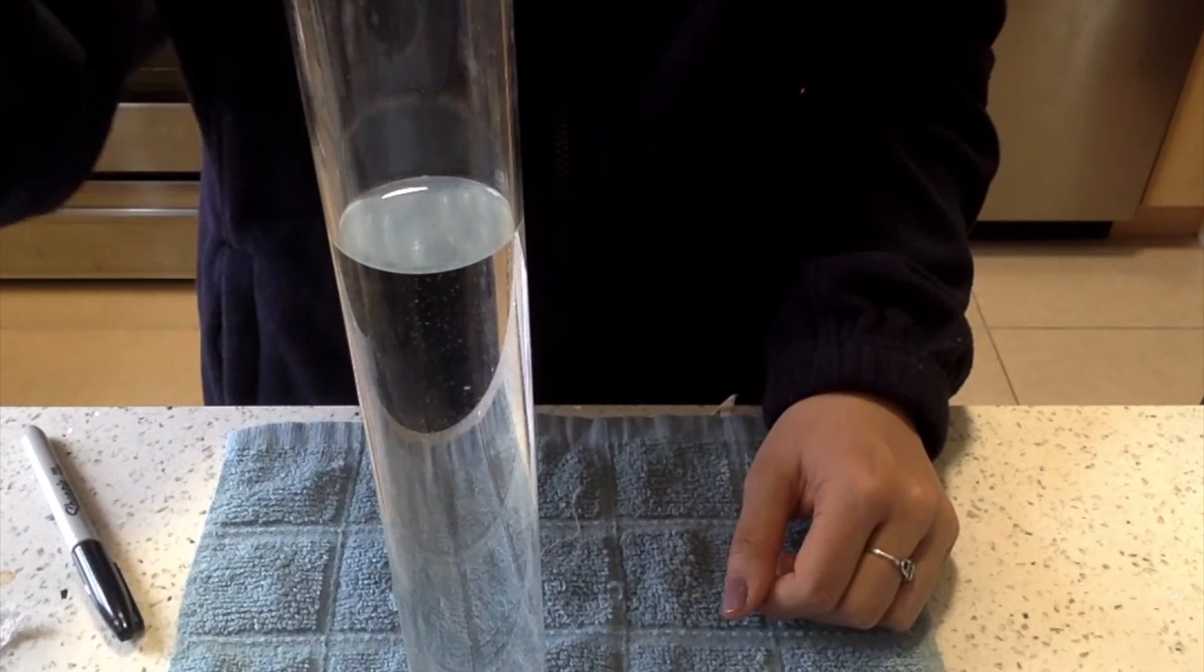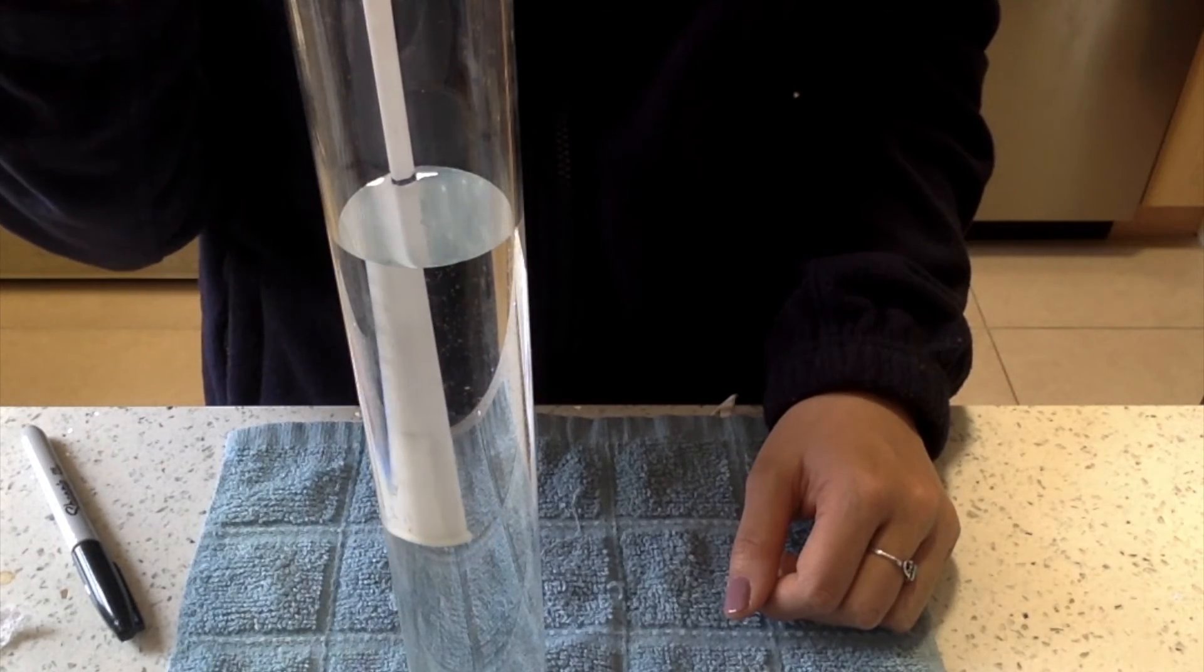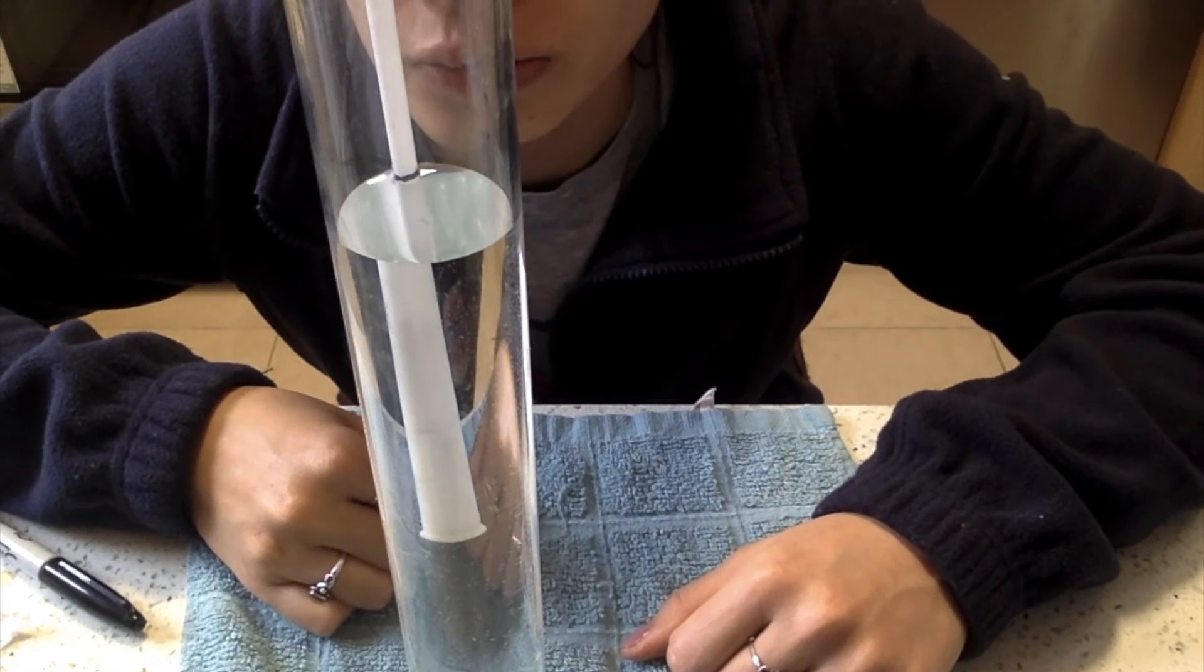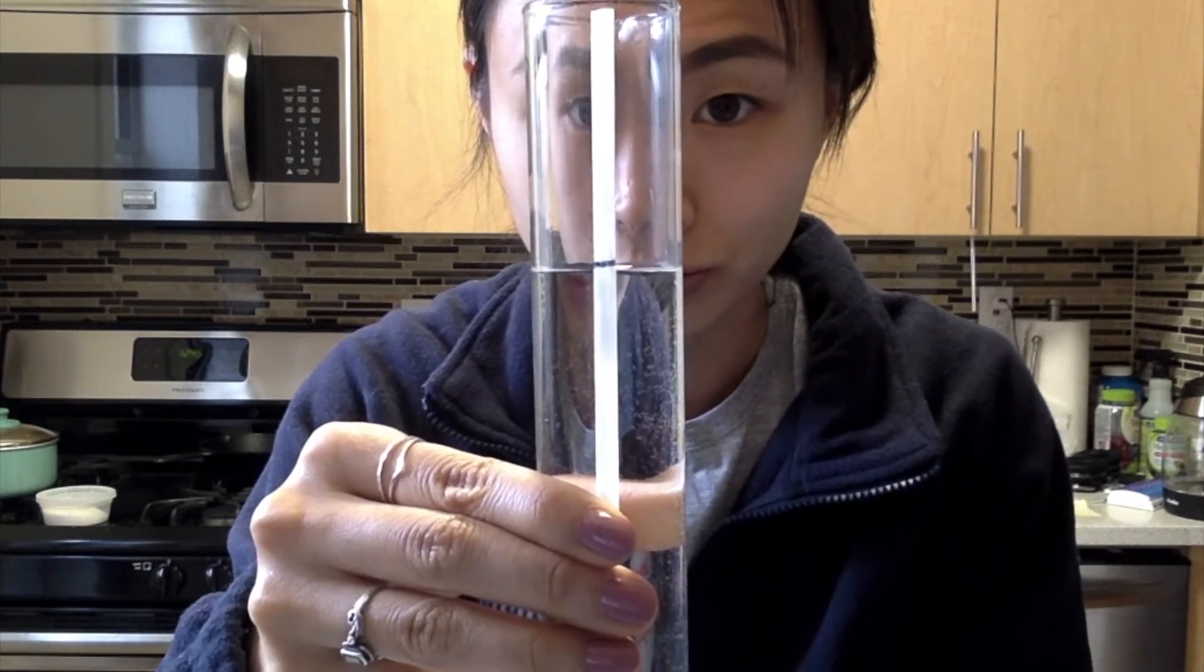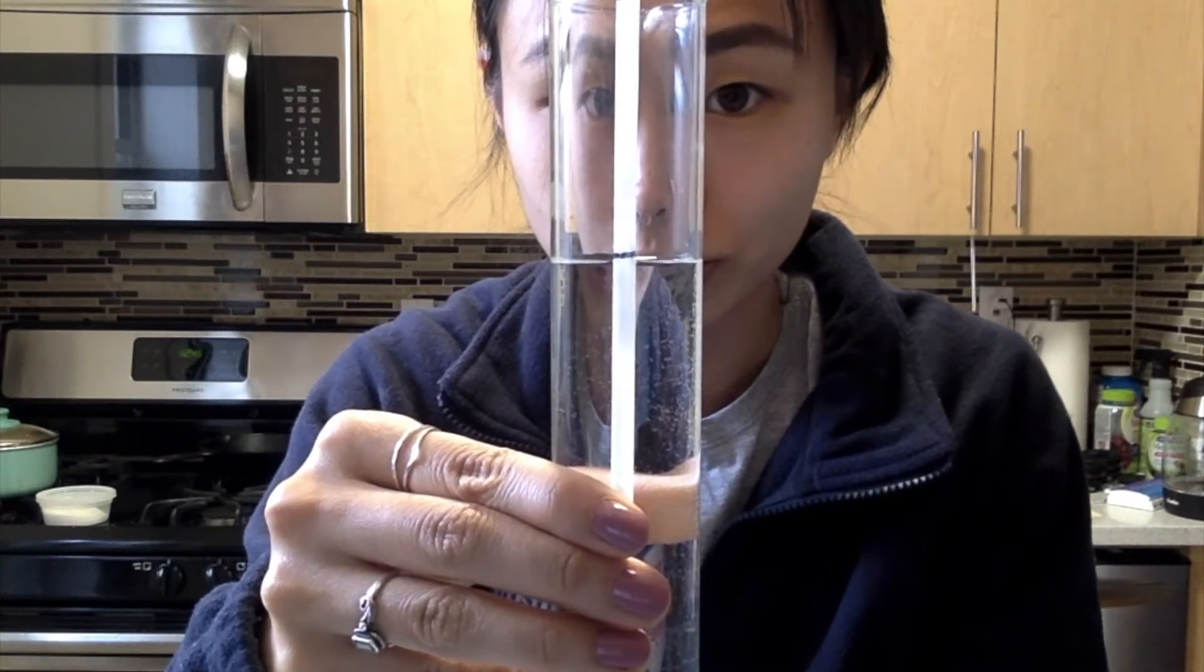Then, place your hydrometer into the water again. The line should mark exactly where the water line is against the straw. Make sure you double check the water line at eye level for accuracy. The line you just marked is a baseline for water density.